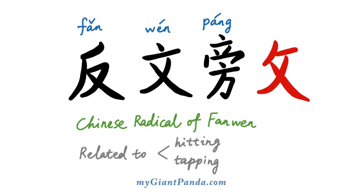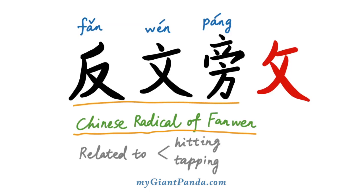Hello everyone. In this video I will show you how to write the Chinese radical 反文旁 (fǎn wén páng). Chinese characters with the radical 反文旁 usually related to hitting or tapping. 含有反文旁的中文汉字,通常跟打或者是敲有关。